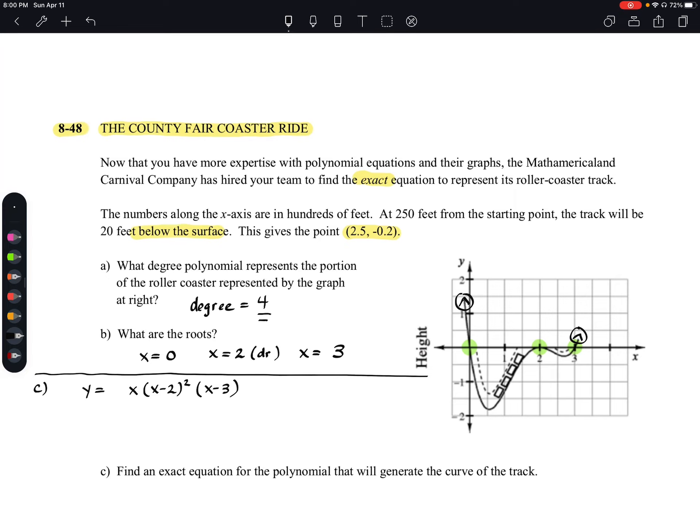Now let's use that method that we just ended up using in 8-47b. Let's take this and let's put in an a value. If we want to find the exact equation, we need to be able to figure out what this a value is. So after we have this kind of general form, we need to find a point to use.